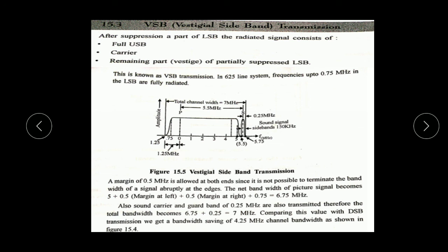In the 625-line system, the frequency up to 0.25 MHz in the LSB is fully radiated. We take 0.75 MHz from the LSB frequency, with a 0.5 MHz margin allowed. Since it is not possible to terminate the bandwidth of the signal abruptly at the edges, the net bandwidth of the signal becomes: 5 + 0.5 (margin at left) + 0.5 (margin at right) + 0.75 (vestigial LSB margin) = 6.75 MHz.